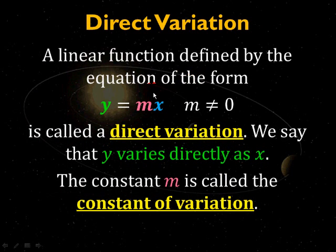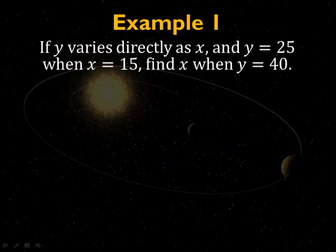A linear function defined by the equation of the form y equals mx, where m is not zero, is called a direct variation. We say that y varies directly as x. We call m the constant of variation. Basically, m is going to be the factor of x that makes y go up. It's just like the slope when we looked at the line on the previous slide.